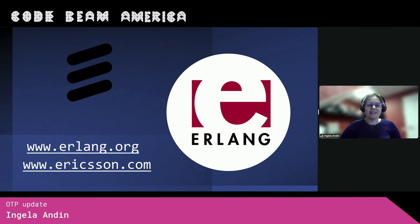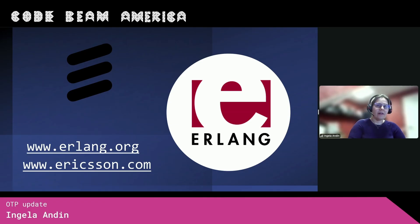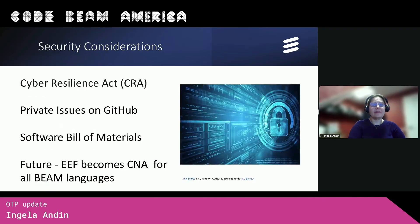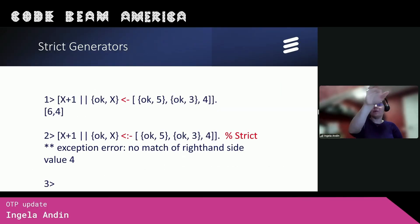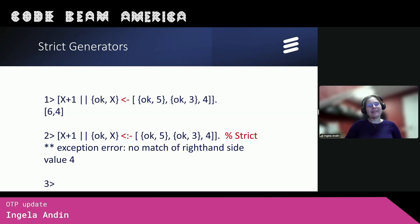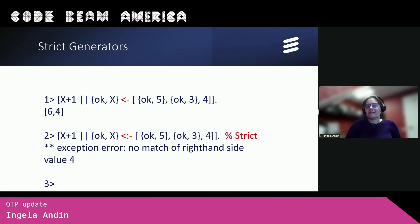Regarding the strict generators — is that a global change to all code, or is it enabled by a feature? No, it's not a global change. A normal list comprehension just has an arrow, and if you want a strict generator, you have to put a colon in the arrow. So it's a new feature and you only get it if you want it. This could be useful if you are iterating over something where you want everything to match — you don't want to filter anything out, and it's an error if something doesn't match.